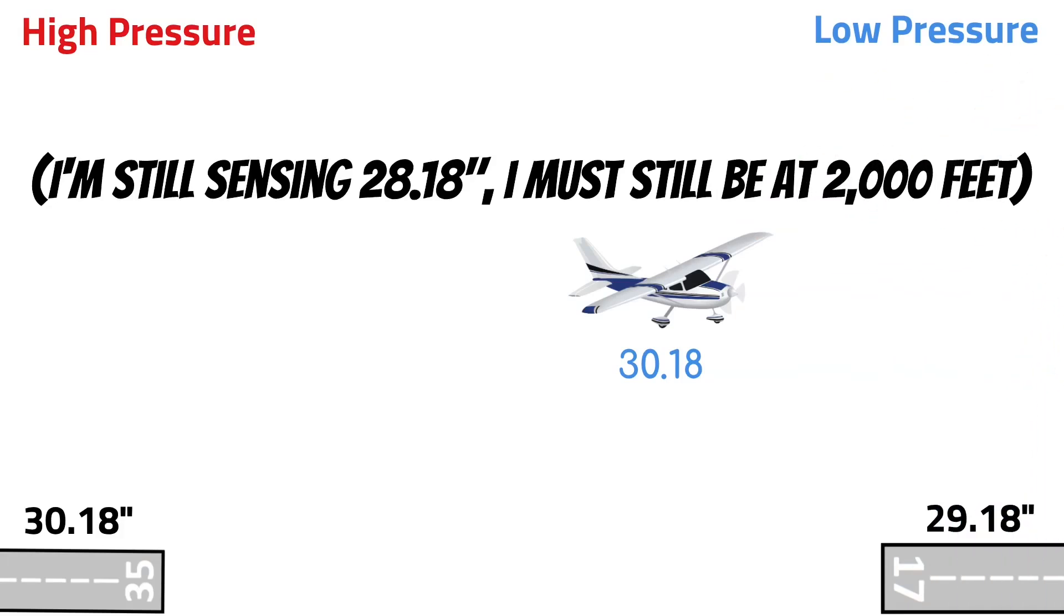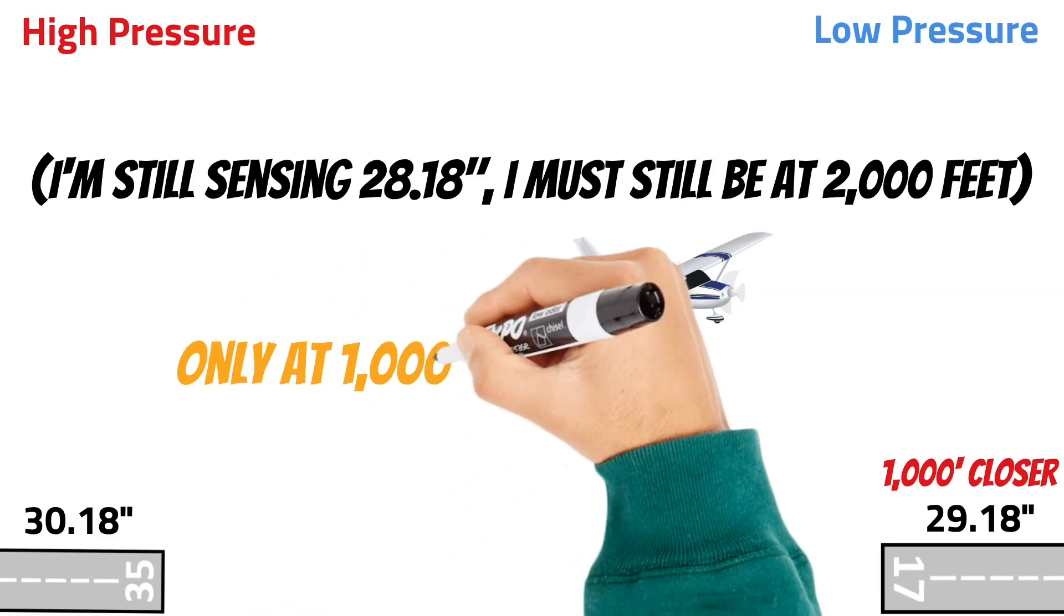But in reality, we know that the altimeter setting is 29.18, so that's 1000 foot closer to 28.18. So we're 1000 feet lower than we think we are and we're only at 1000 feet MSL.